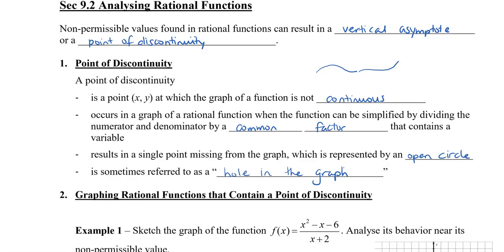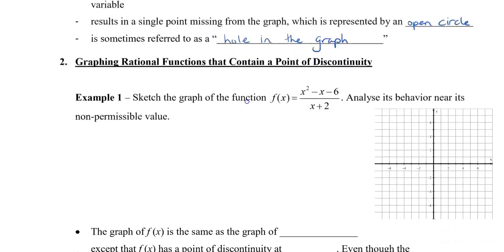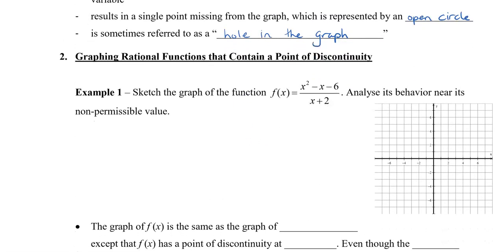Let's take a look at an example. We want to sketch the graph of the function and analyze its behavior near its non-permissible value. From the equation, we can see that x plus 2 can't equal 0, so x can't equal negative 2. That's the non-permissible value.